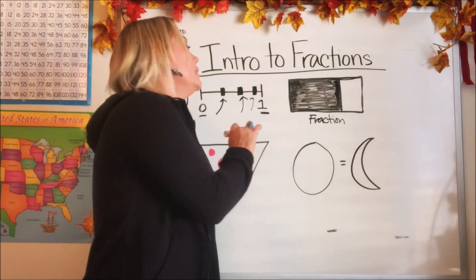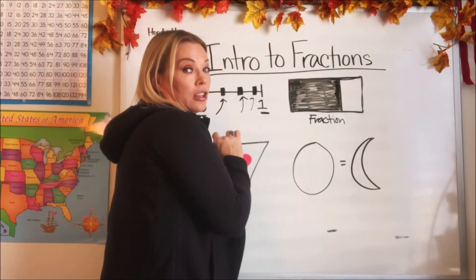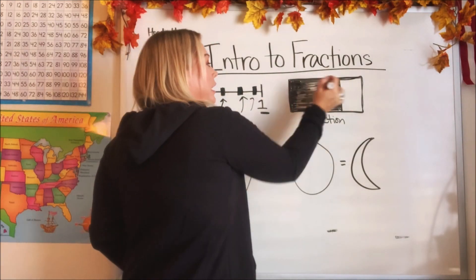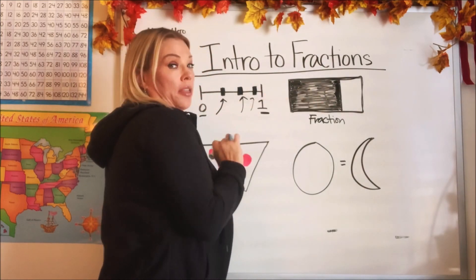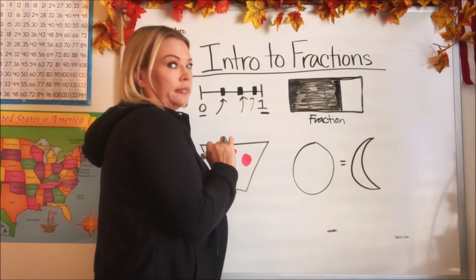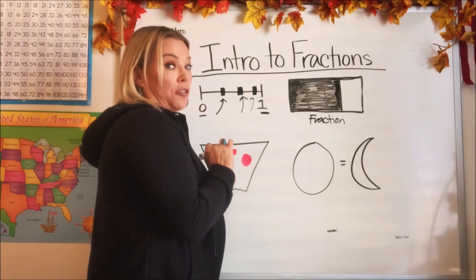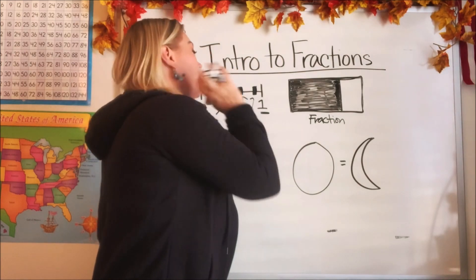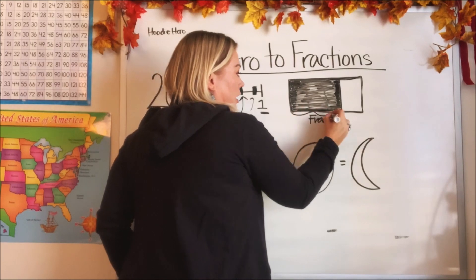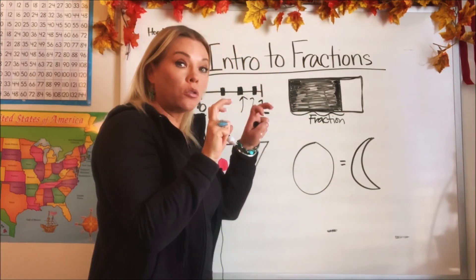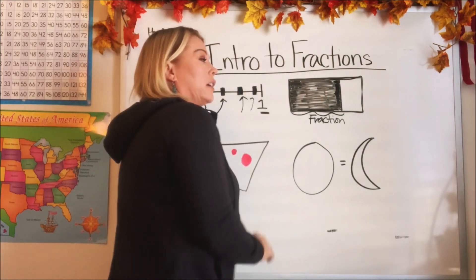Let's look at the second example. Here I drew a rectangle and I colored in part of it. Now, did I color in the whole thing, or did I color in a fraction of the rectangle? I colored in a fraction of it. This right here is just a part — or a fraction — of the whole rectangle.